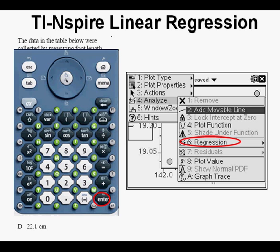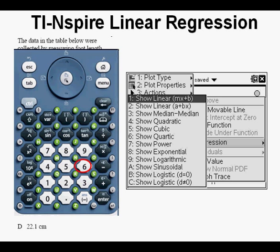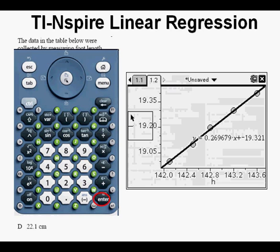We see Option 6, Regression. Let's save a keystroke this time by pressing 6. We have a list of types of regressions we can use. The one we want is the one at the top, the one that's already highlighted, the linear regression in mx plus b form. Press Enter.